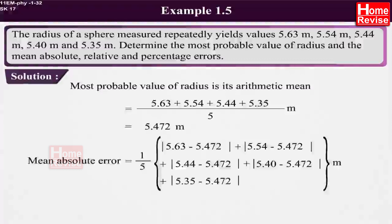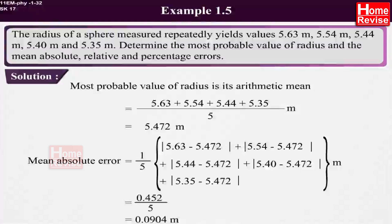1 upon 5 multiplied by mod of 5.63 minus 5.472... which is equal to 0.452 upon 5 which is equal to 0.0904 meters.